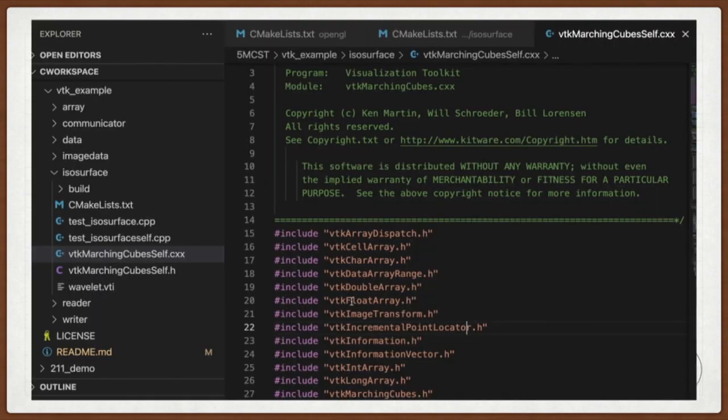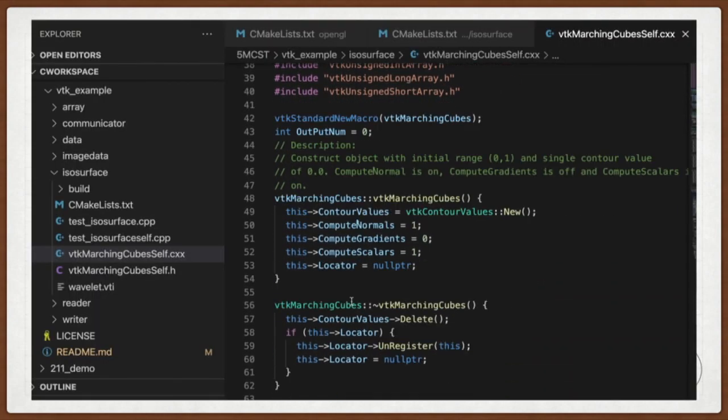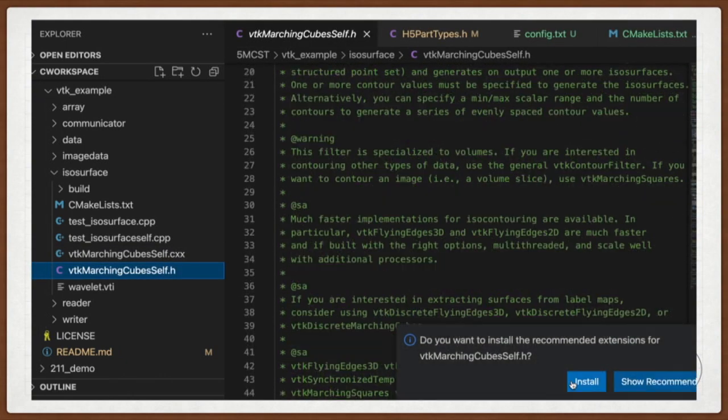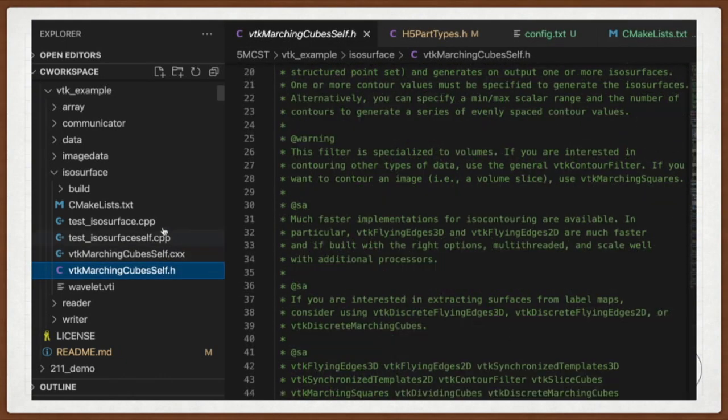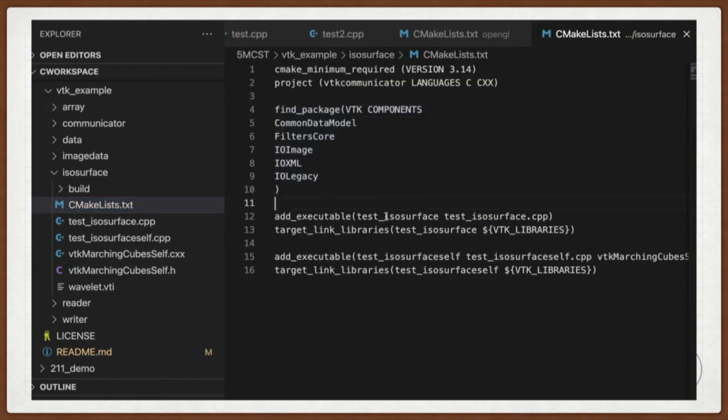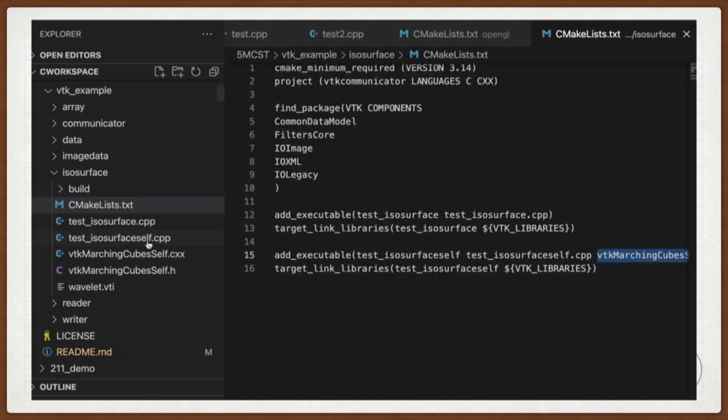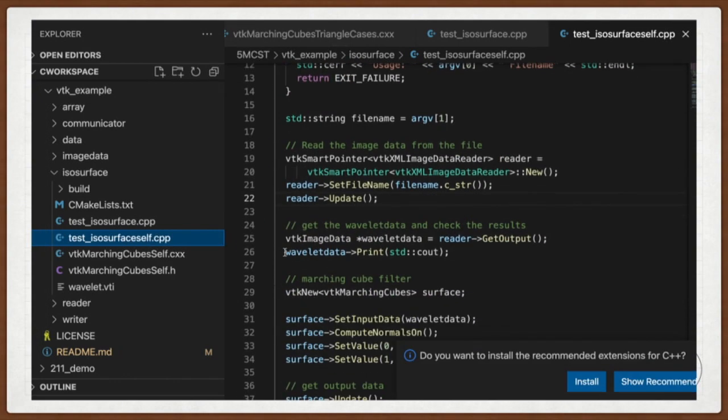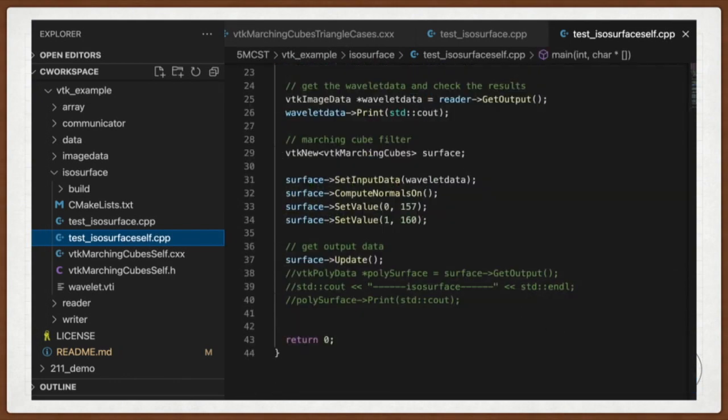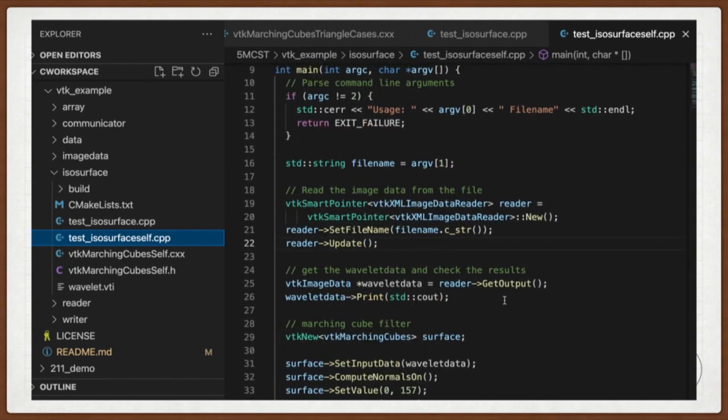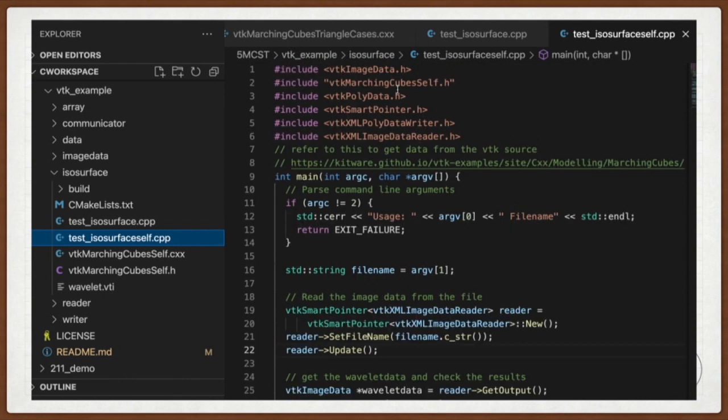The best way to understand the code is to run it and add some print log to see what's going on here. This is the example we use to understand the Marching Cube algorithm in this article. We basically copy-paste original header and source file from the VTK library only for the Marching Cube algorithm, and we get our own version of the Marching Cube algorithm and compile it separately. By adding all kinds of logs, we can basically figure out the main logic of the algorithm. It is also a good practice to understand other VTK filters by this way.